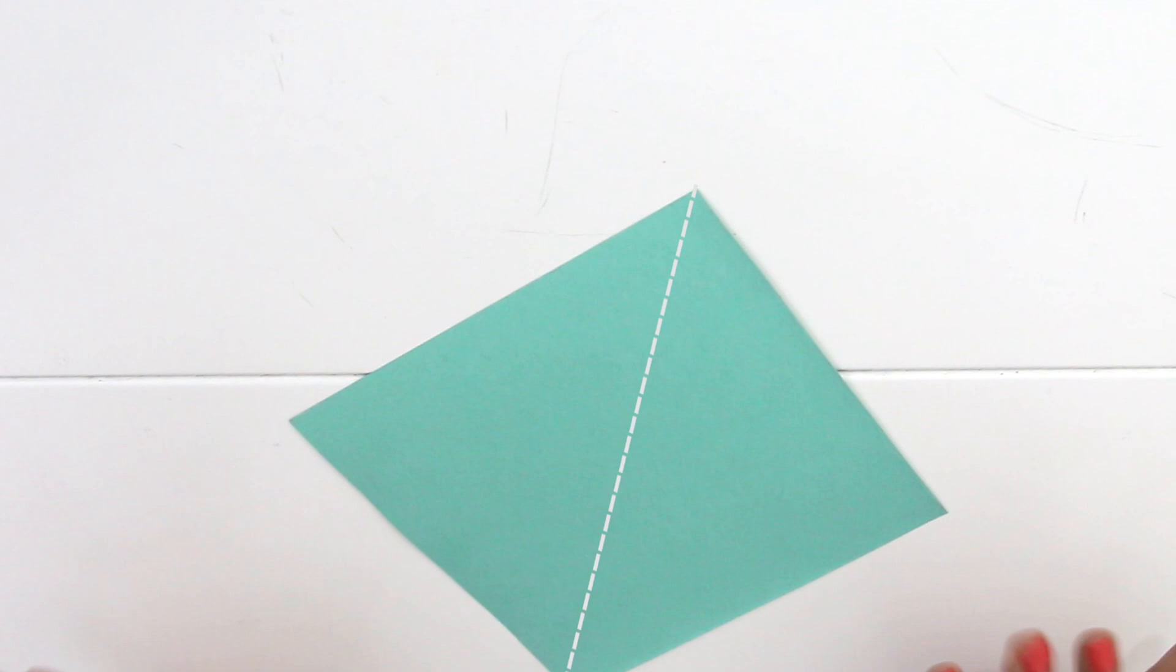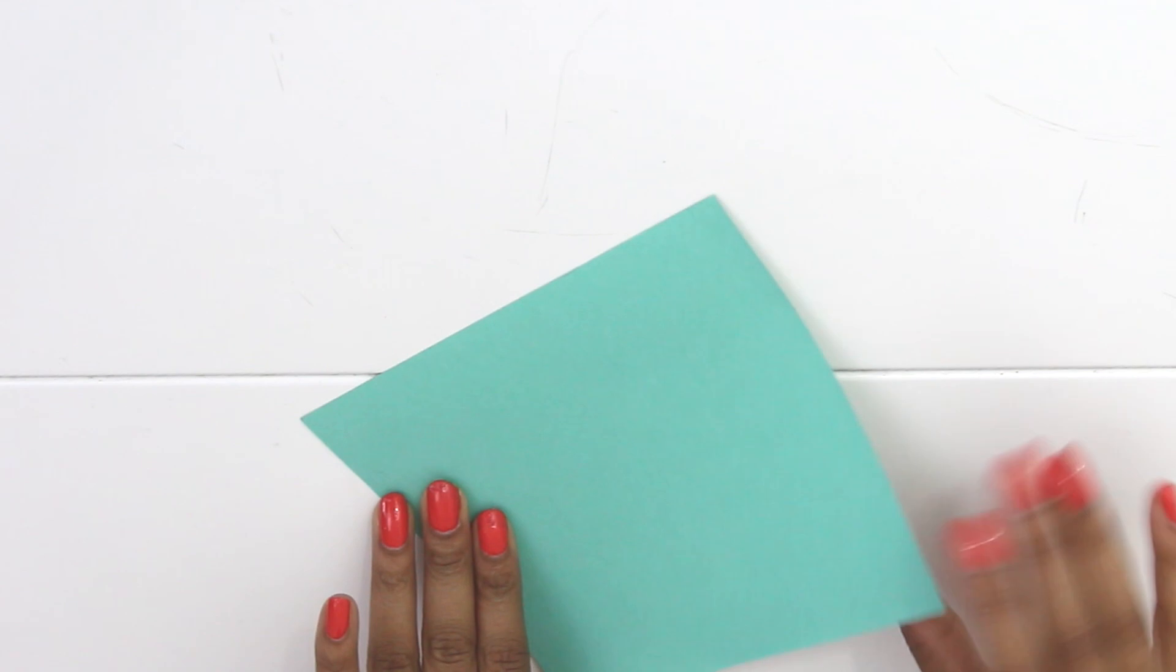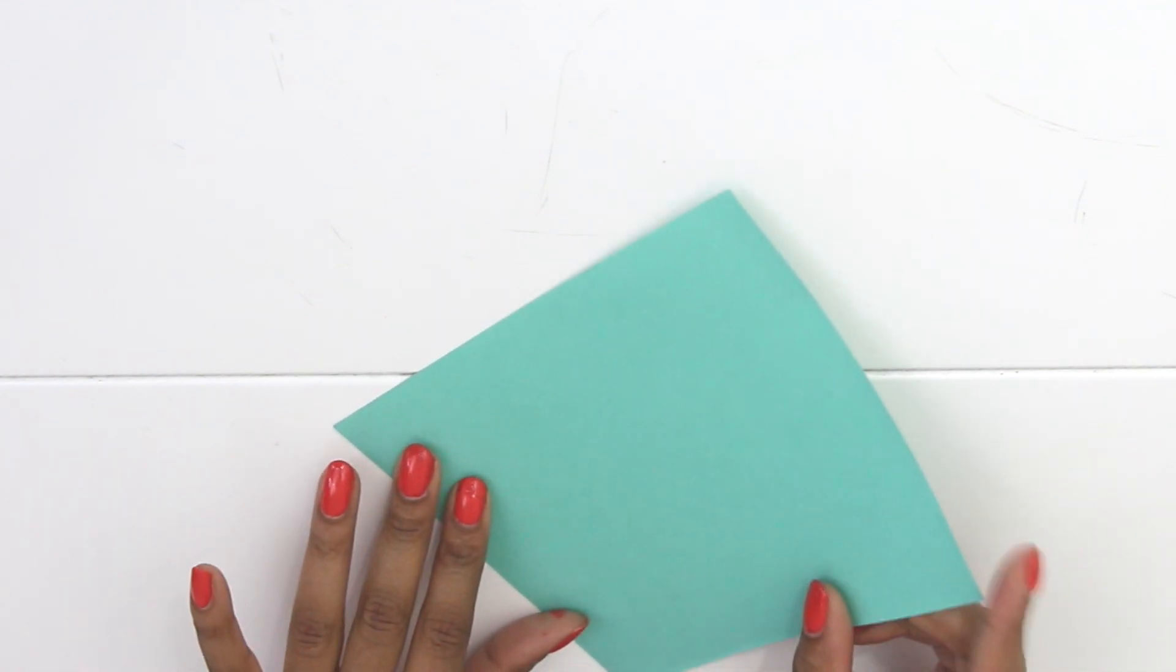Pour ça, il vous faudra plusieurs feuilles de papier découpées en carrés, et chaque feuille correspondra à une branche de l'étoile.